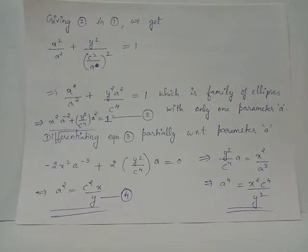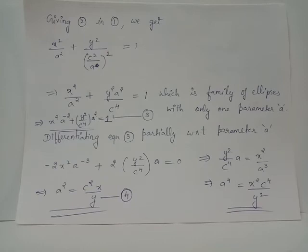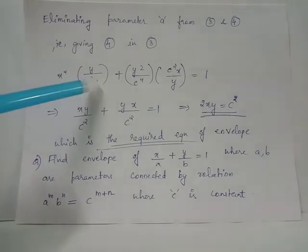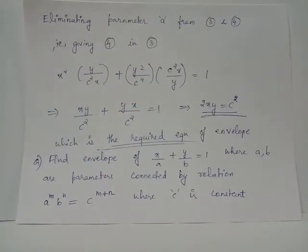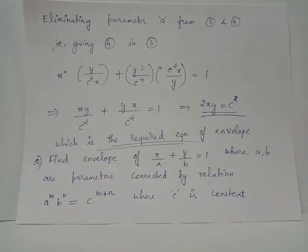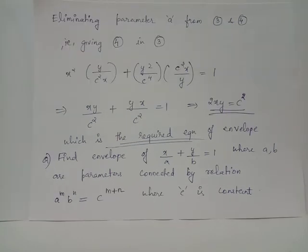Now substituting equation 4 into equation 3 — wherever a² appears we replace it with c²x/y, and a⁻² is replaced by y/(c²x). This gives x²·(y/c²x) + y²/c⁴·(c²x/y) = 1. Here x cancels in the first term and y cancels in the second term, simplifying to xy/c² + xy/c² = 1, which gives 2xy = c². This equation, independent of the parameter, is the required envelope of the family of concentric and coaxial ellipses of constant area.